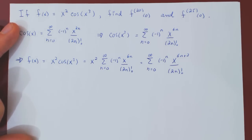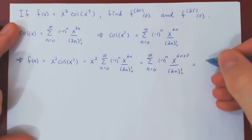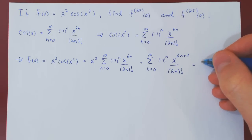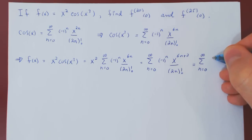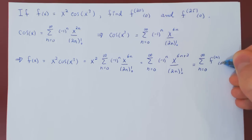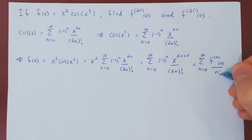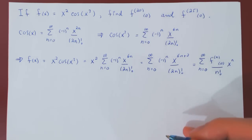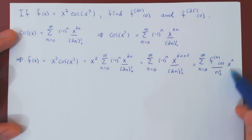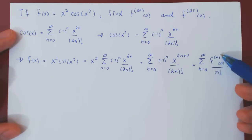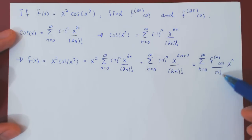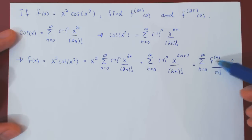Now we have the Maclaurin series of f of x, which is x squared cos of x cubed. Recall the general formula for the Maclaurin series of f of x: it is given by the sum from 0 to infinity of the nth derivative of f at 0, over n factorial, times x to the n. Once you find the Maclaurin series of a given function, all higher derivatives of the function at 0 are encoded in it, as n goes from 0 to infinity, and we can just pluck them out.